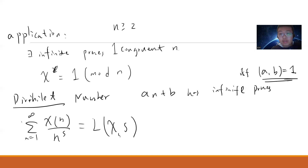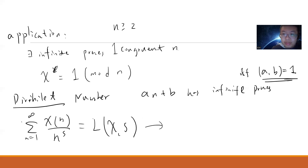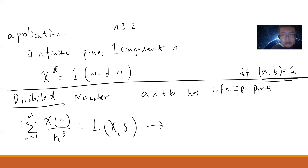Once you have the Dirichlet L-function, you start from it and do analytic continuation, do some expansion, take some limits, and deal with some group representations in an abelian group, and you can prove it. But in order to prove that there are infinitely many primes congruent to 1 mod n, you only need the cyclotomic polynomial.